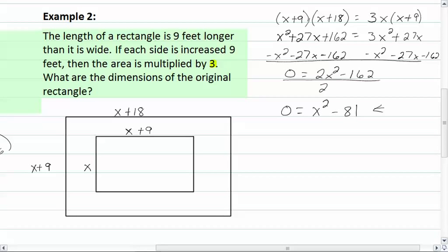This is a difference of squares, and it will factor easily to x plus nine, x minus nine. This will give us a negative answer. We cannot have a negative distance, so that means we're just going to use x minus nine. So that means x equals nine.